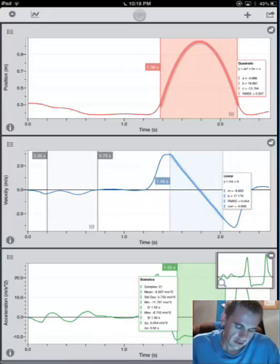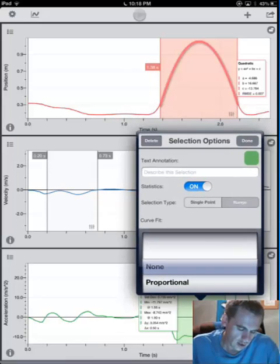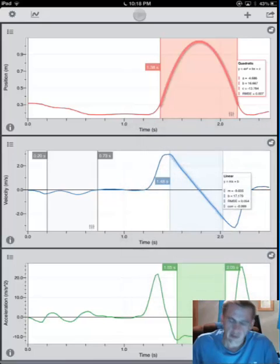I've got a position time graph, a velocity time graph, and an acceleration time graph. Now in the lab, it said let's go through and find when the object is moving up, when the object is moving down, and let's label those on our graph.